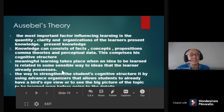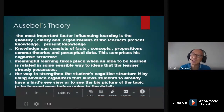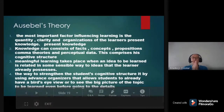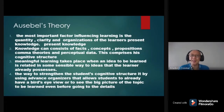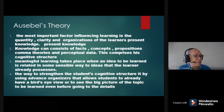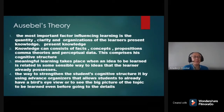Meaningful learning takes place when an idea to be learned is related in some sensible way to ideas that the learner already possesses. Students will appreciate the lesson being taught if it is connected to previous knowledge. In education, you are learning many theories, and Ausubel's theory is connected to Gestalt theory, behavioral theories, and neo-behavioral theories — they are all connected to each other.